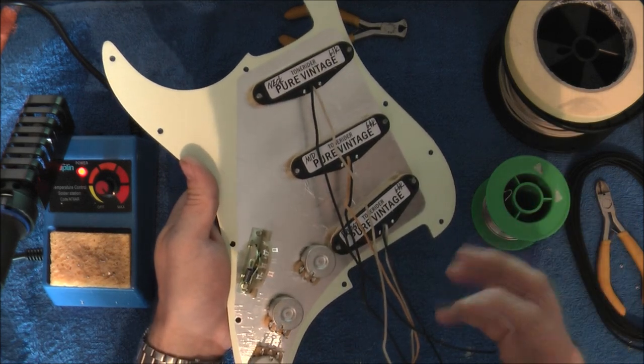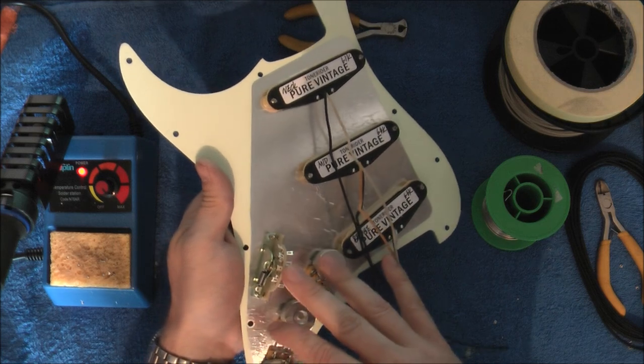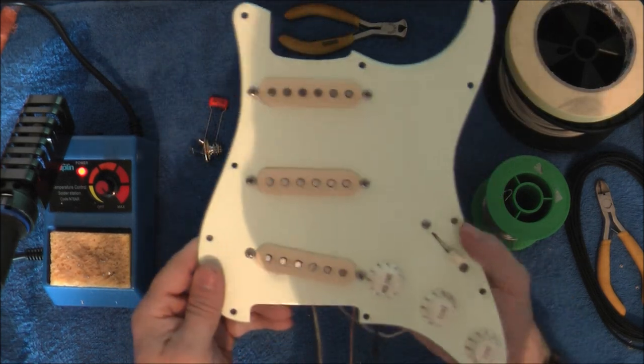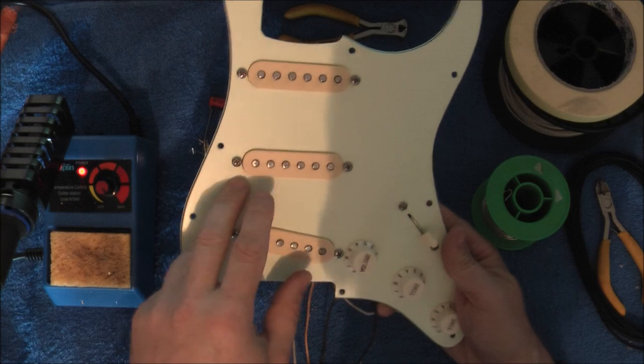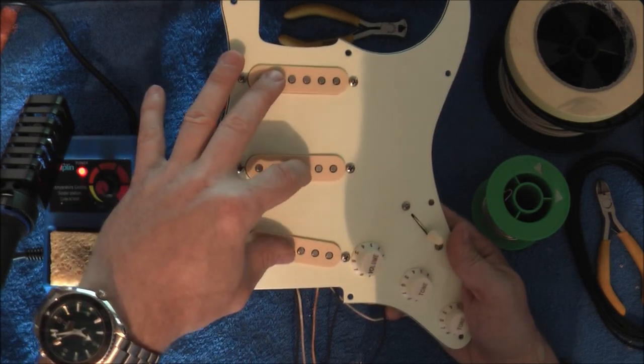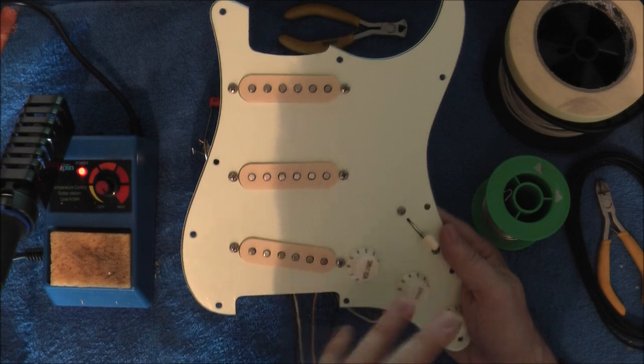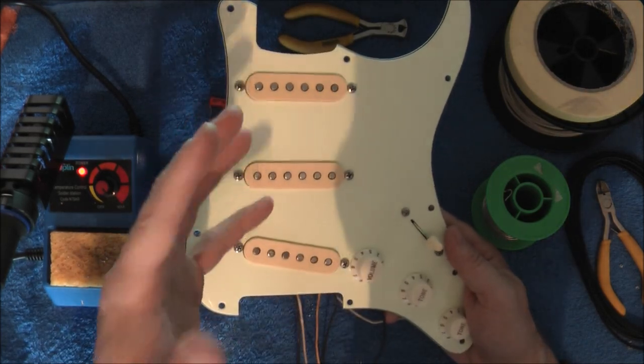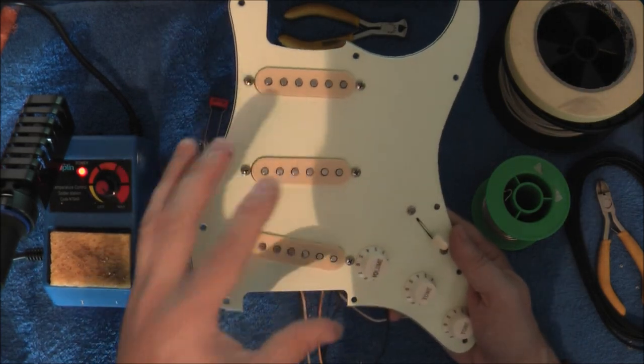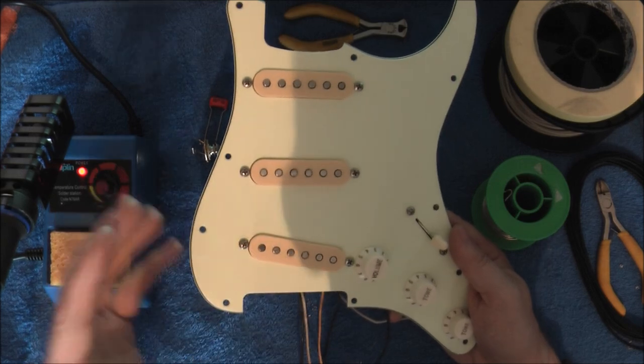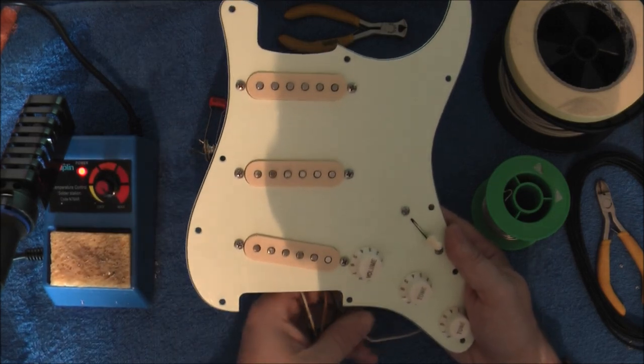It's a typical standard strat setup, so 250k pots and a five-way switch. This one's a little bit different. It's a mint green scratch plate with vintage white ivory pickups and knobs on it. That's what the customer wanted. But again, we do different scratch plate options, different pickup colors and stuff like that, so you can basically build it to your specifications.